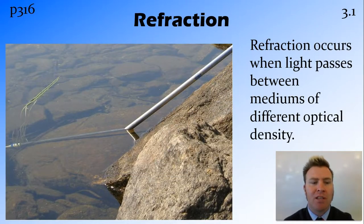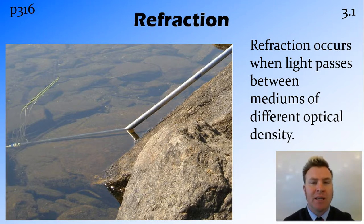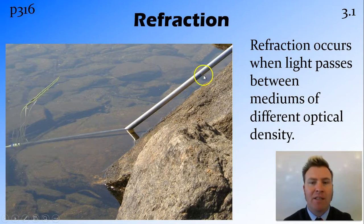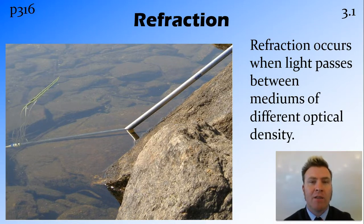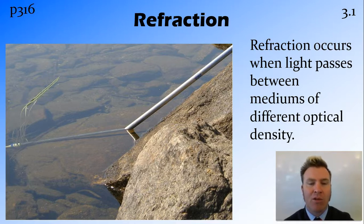Refraction is a process where light bends as it enters a medium that is more or less optically dense than the one it was already in. This is why we see apparent depth — this pipe is actually straight but appears to bend, and you might have seen this with a straw in a glass of water. Things generally look more shallow when looking into water because the water is more optically dense. Light from the Sun hits the rocks at the bottom, reflects, and then bends as it exits the optically dense water into the less optically dense air before hitting our eyes.